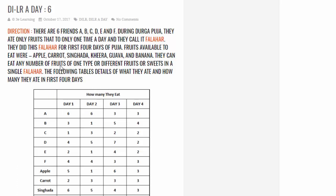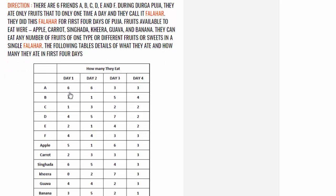What do they mean by eating any number of fruits of one type or different types? They can eat any number of fruits — like on day 1, A ate 6 fruits. Those 6 fruits could be a mix of any type. If B ate 3, those 3 fruits could be of a single type or different types. The question does not specifically say they must eat a single type.